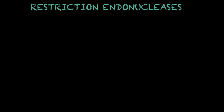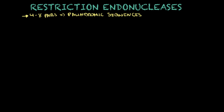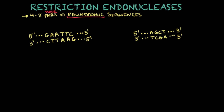So restriction endonucleases are enzymes that cleave the DNA molecule at particular sites. One important thing to add is that these specific sequences are between four to eight base pairs in length. These sequences are known as palindromic sequences, which means they can be read the same way both forward and backwards. An example: if we read G-A-A-T-T-C and go backwards we also read G-A-A-T-T-C. So restriction endonucleases find these palindromic sequences in the DNA molecule and use them to cleave at that particular site.